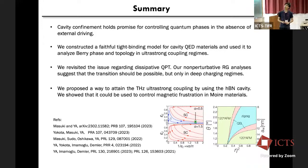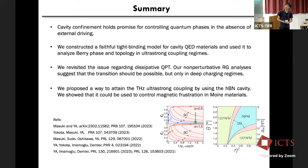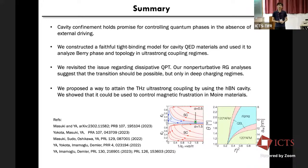In summary, cavity confinement holds promise for controlling quantum phases in the absence of external driving. First, we constructed a tight-binding model for cavity QED materials and used it to analyze Berry phase and topology in ultrastrong coupling regimes. Second, we revisited the issue of the dissipative quantum phase transition, and our non-perturbative analysis suggests the dissipative transition is possible only in the deep charging regime. Finally, we proposed a possible way to attain terahertz ultrastrong coupling using the hBN cavity, and showed it could be used to control magnetic fluctuations in moiré materials.